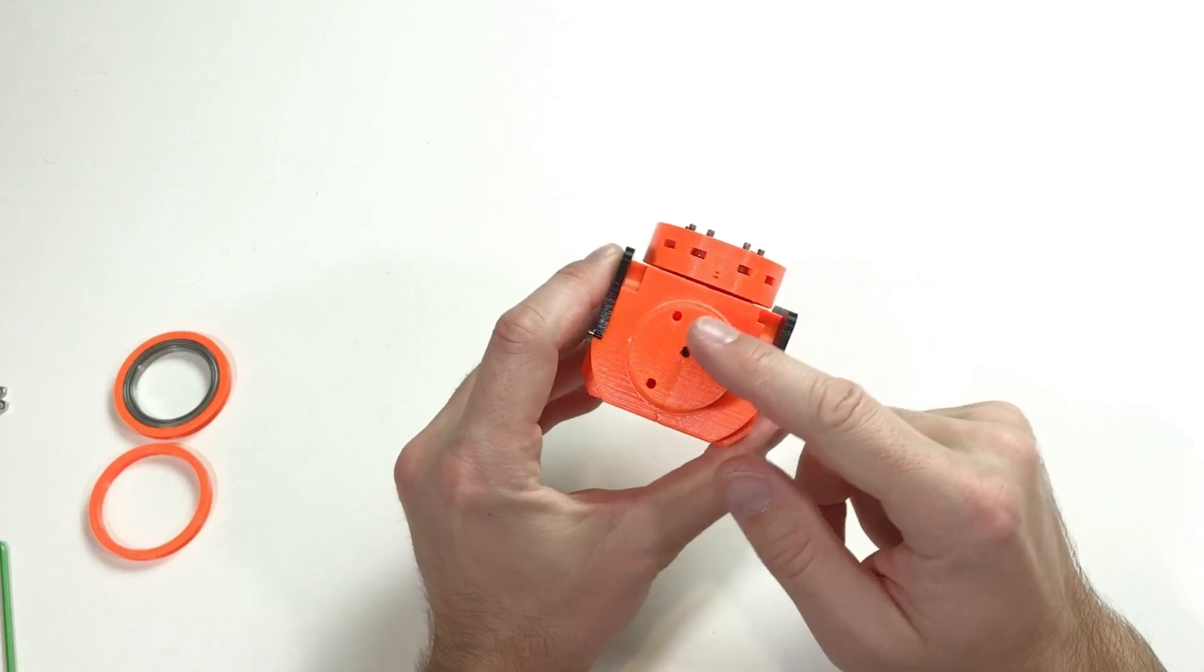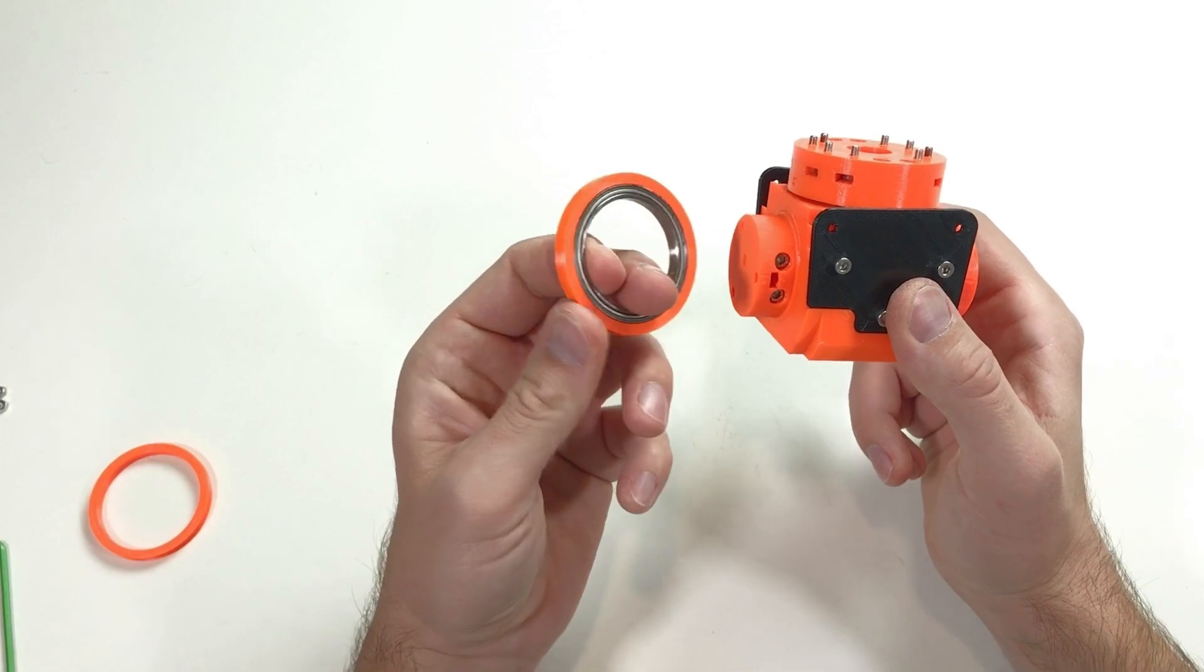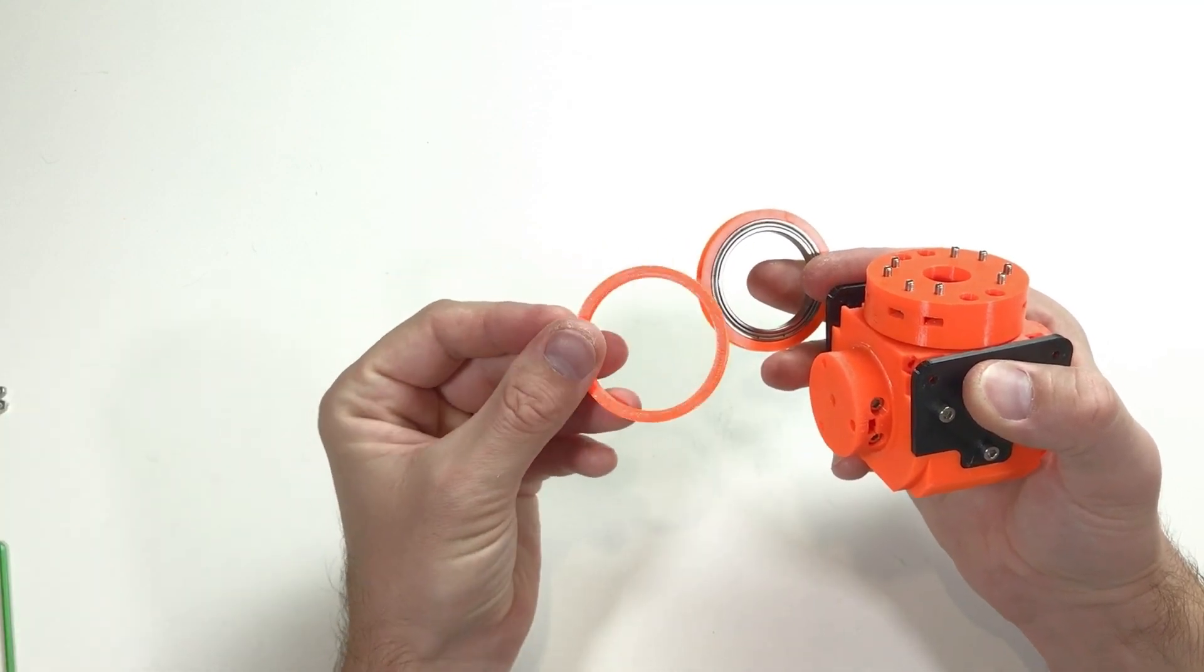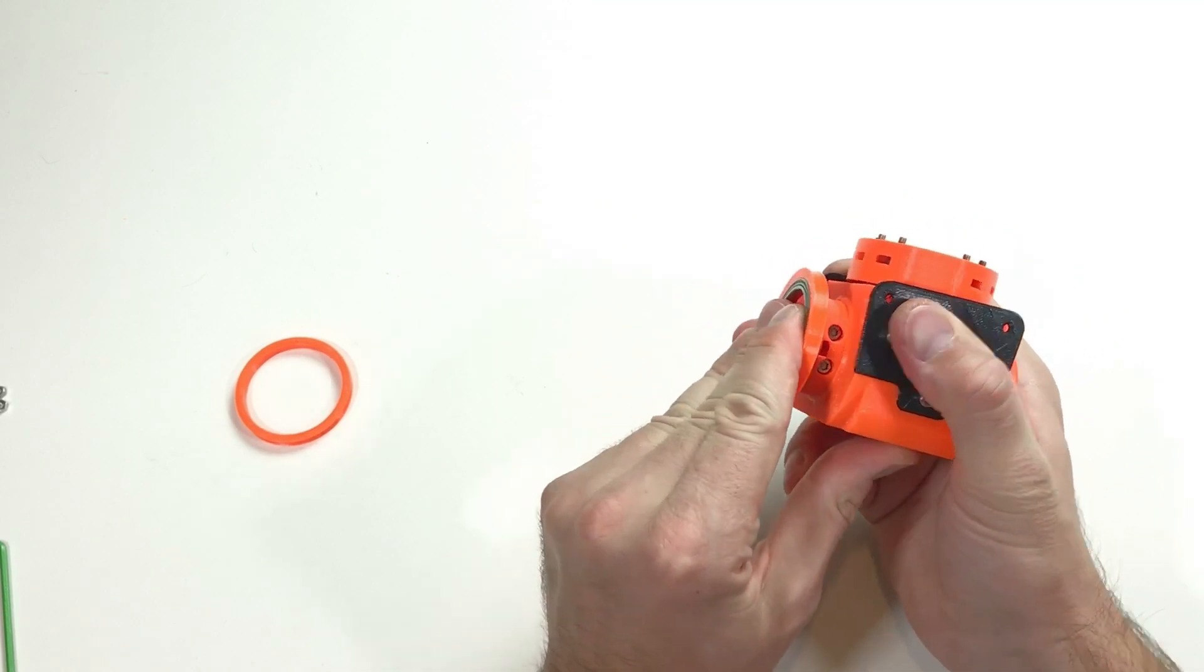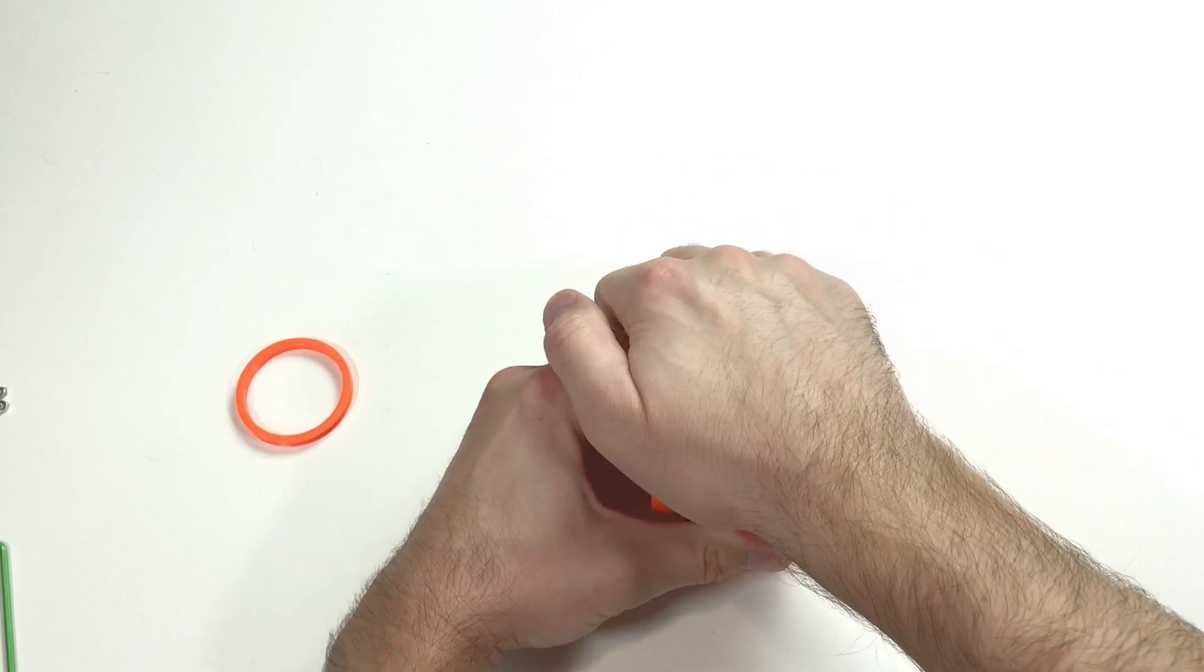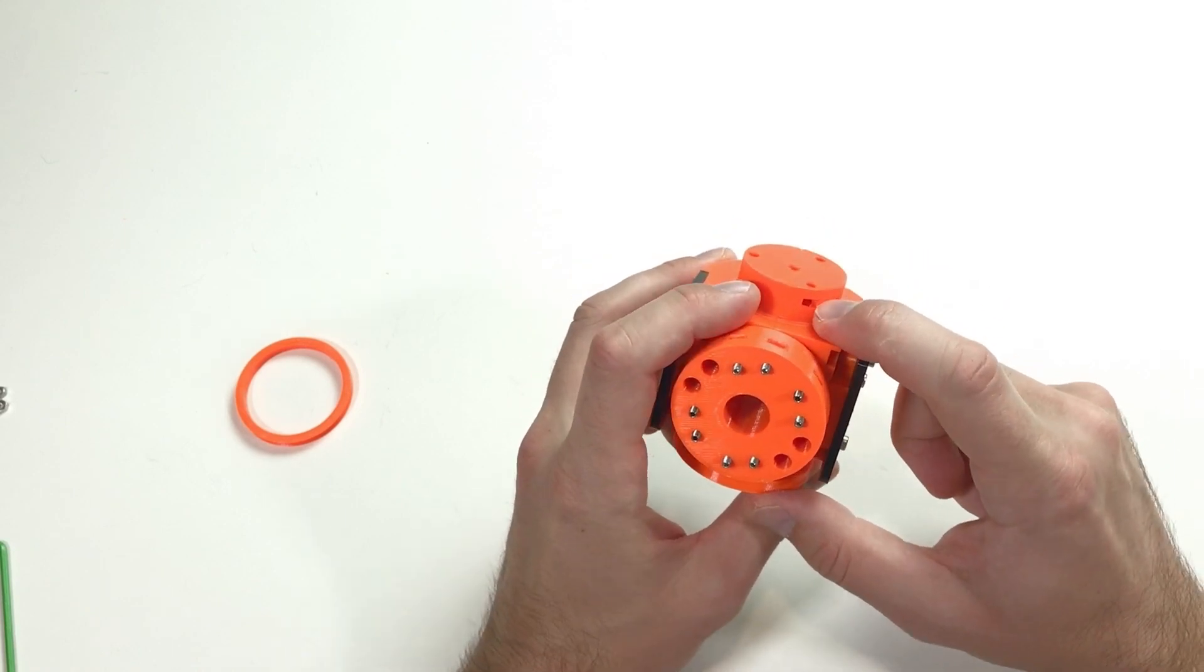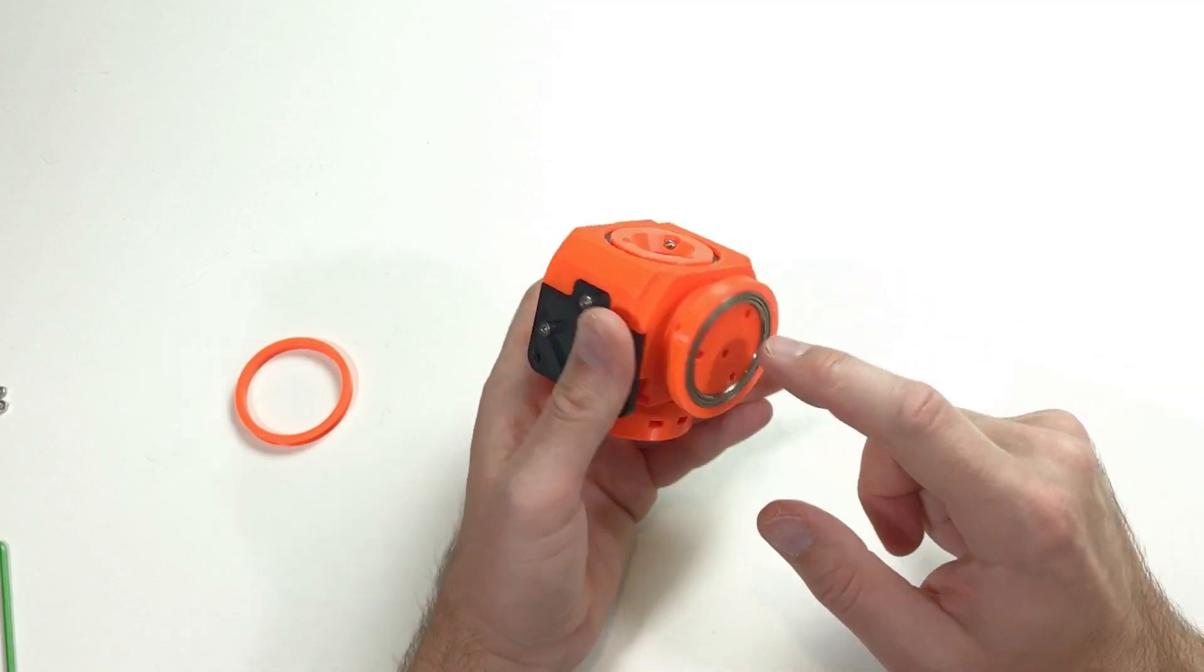But before installing it I need to install the embedded nuts here, here, and here. These embedded nuts are going to hold this piece over here. Again this piece is in black. This is because I will make this piece in carbon fiber in the future. And I should do the same with this part.